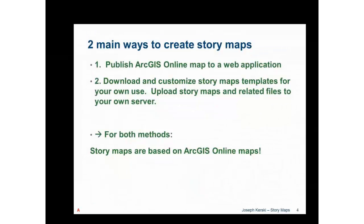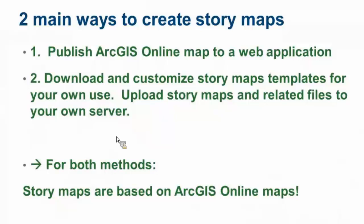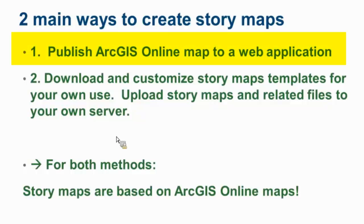There are two main ways to create story maps. First, publish an ArcGIS Online map to a web application. These are the web applications here — a gallery of about 18 little thumbnail maps, swipe maps, and others. There's a profile where you can make a 3D elevation profile. We don't give you too many because it's designed to be the most useful. What you're doing there is creating an ArcGIS Online map and publishing it to one of the story maps web applications.